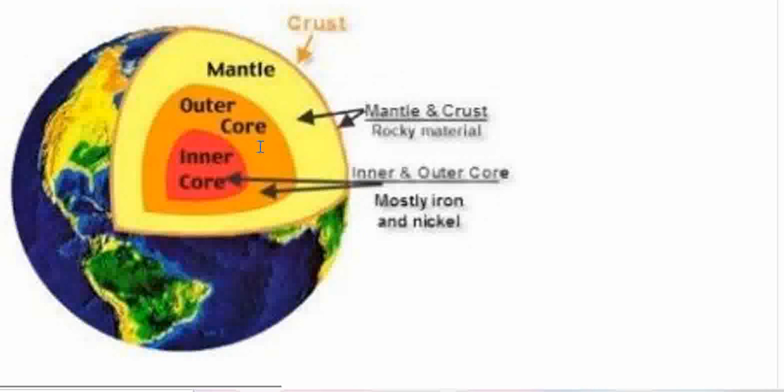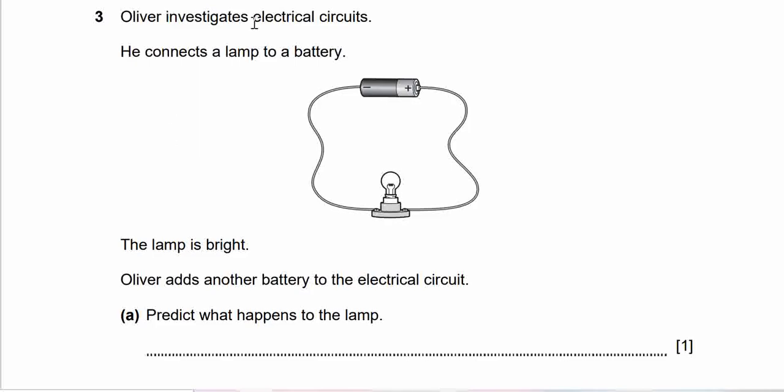Question 3: Oliver investigates electrical circuits. He connects a lamp to a battery. The lamp is bright. Oliver adds another battery to the electrical circuit. Predict what happens to the lamp. I believe you may have different answers. This is the example of a correct answer. You may write in the comment section in whichever social media you're following, through TikTok, Instagram, or YouTube.